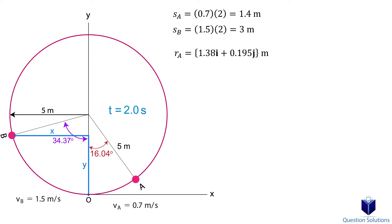So for the x component, we have negative 5 sine 34.37 degrees. The y component is 5 minus 5 cos 34.37 degrees. Again, we follow the same logic as we did with particle A.